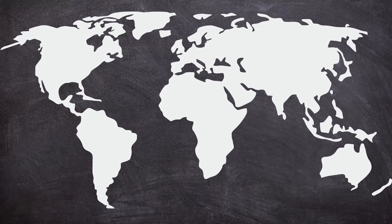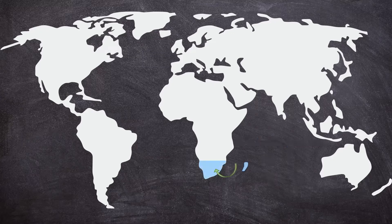Before we start, there's just one thing I want you to take notice of. I already explained this in the previous video but I want to mention it here as well. All around the world we use two different decimal separators — some countries use a comma and others use a point. I use a decimal comma, but that doesn't change anything else. All the rules stay exactly the same.